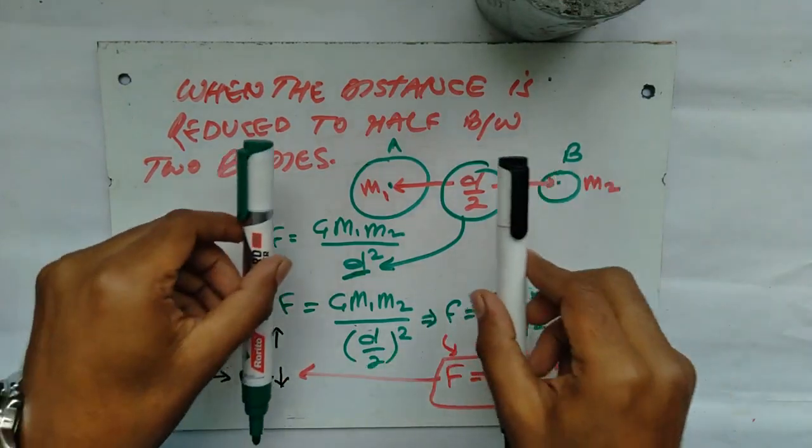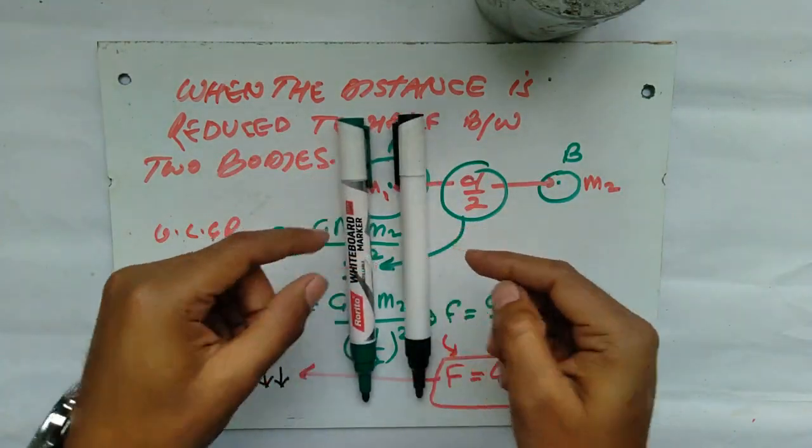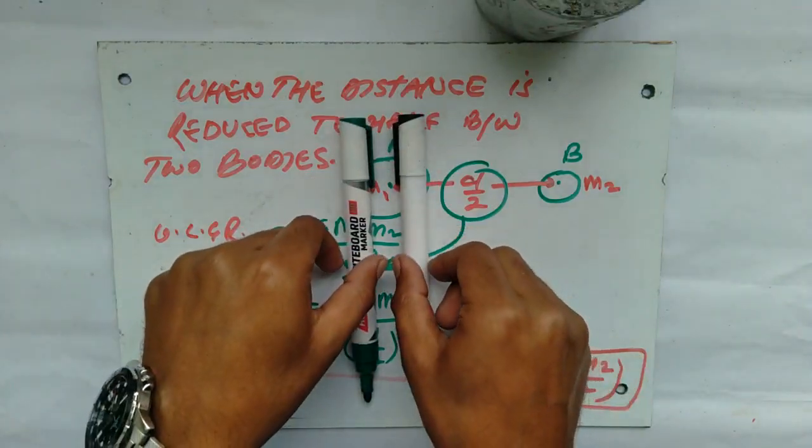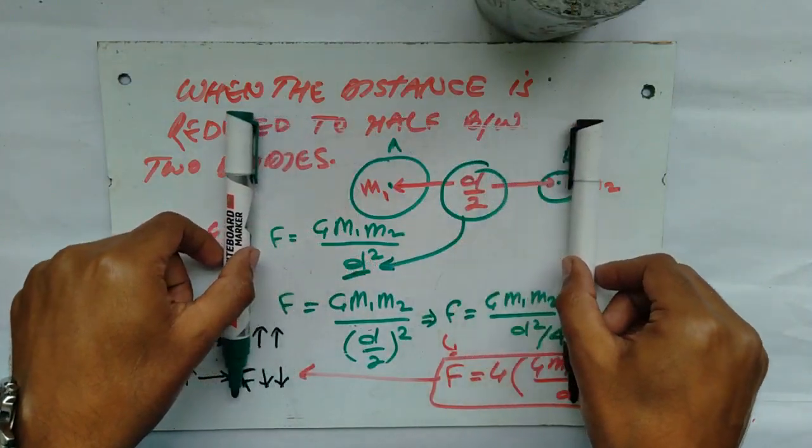This means if two objects are very closer, the effect of force is very large between them. And as we are separating them, the effect of force is getting reduced.